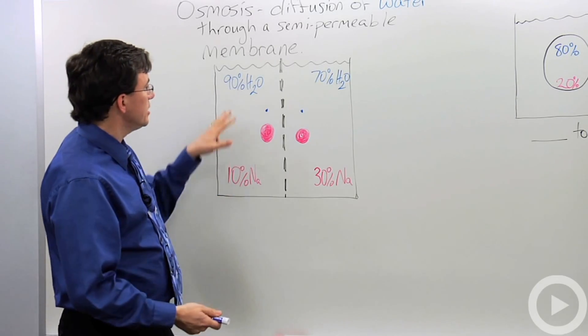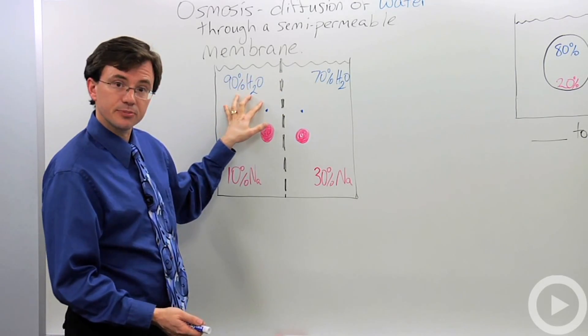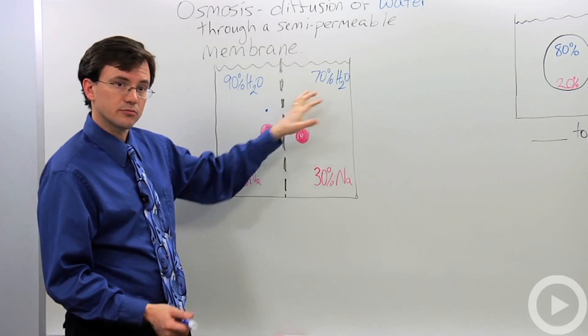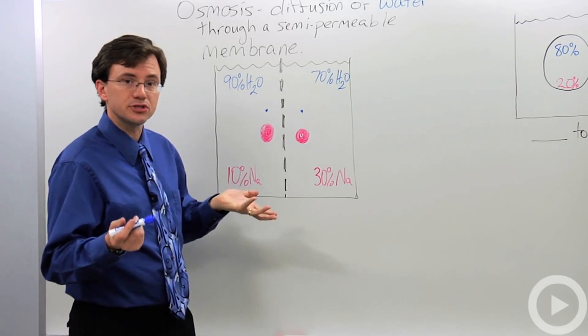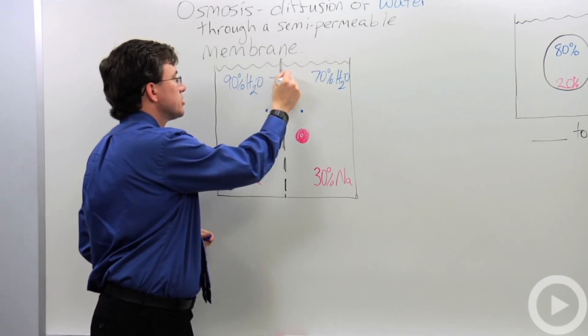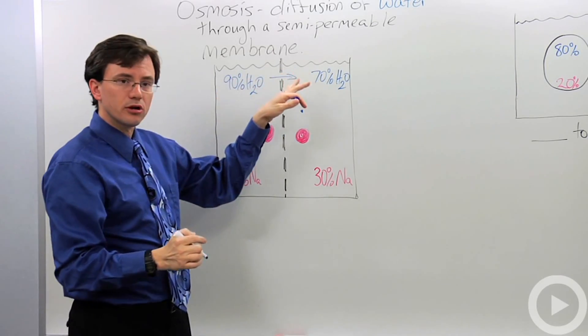So what we see here is that the water starts to diffuse from where there's 90% water to where there's 70% water. Why? Because that's what molecules do. So the water tends to go like this. Now does all of the water go? No.